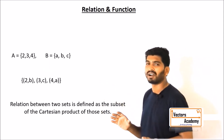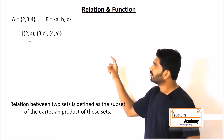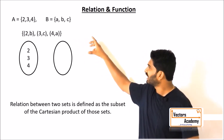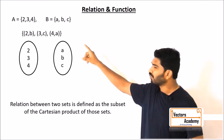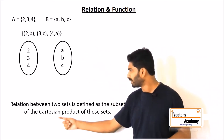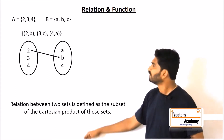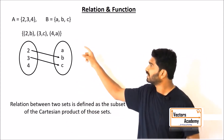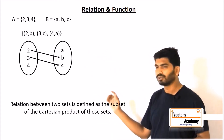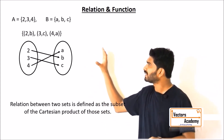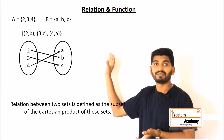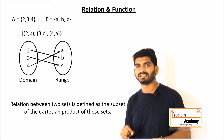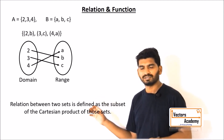Let's see how a relation is represented graphically. The first set is set A and the second set is set B. We put arrows where elements are related — for example, 2 is related to b, so there's an arrow from 2 to b; 3 is related to c, and so on. In this graphical representation, the first set is called the domain and the second set is called the range.